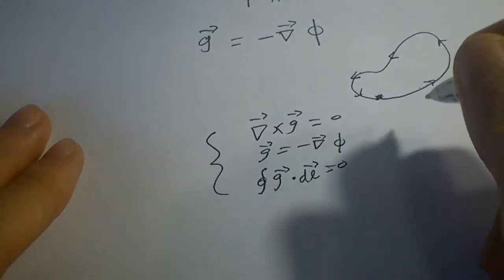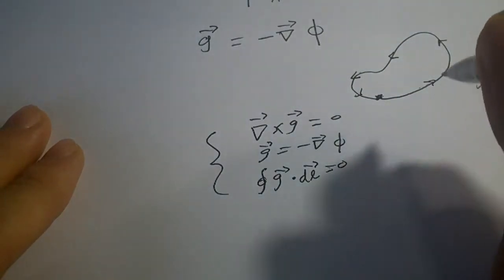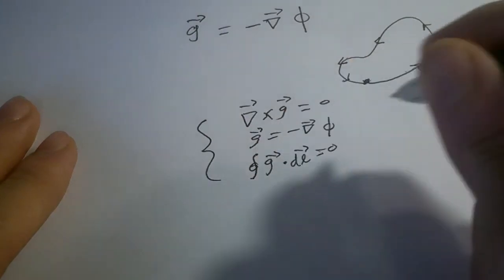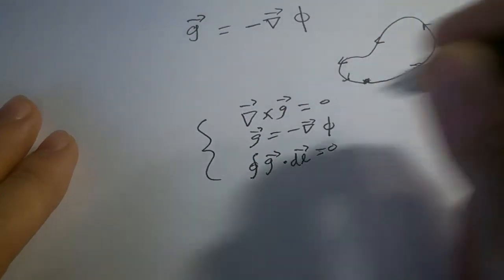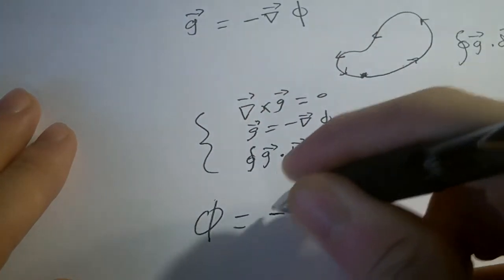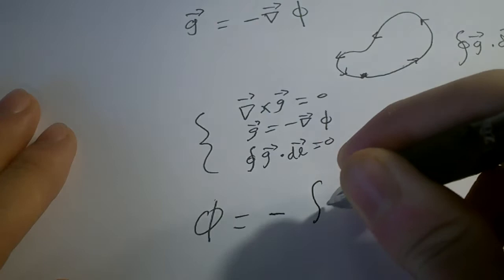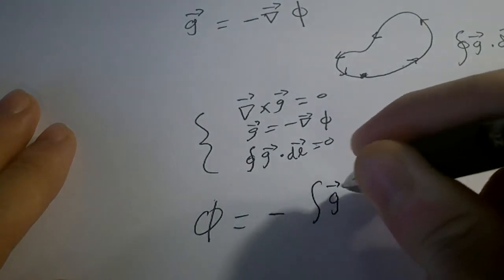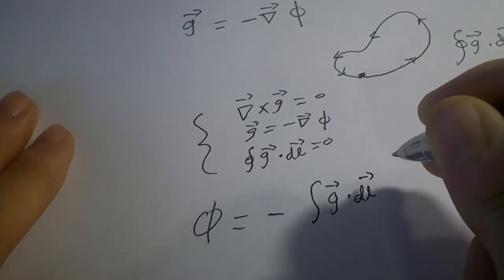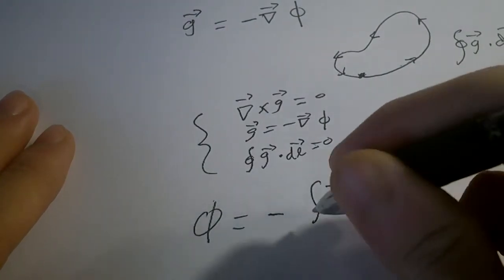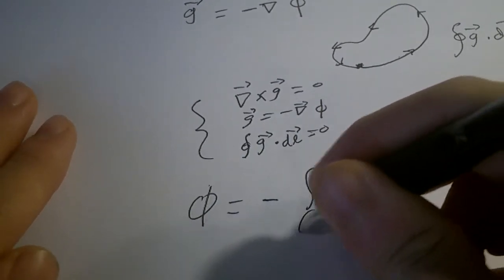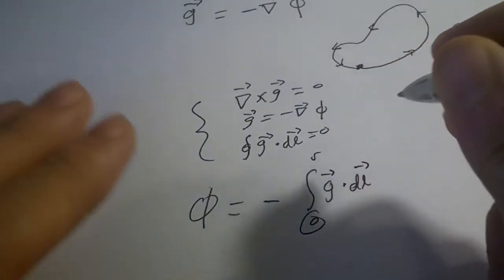Also, we can say that to find phi, phi equals minus the integral of g·dl from some source point to a distance r.